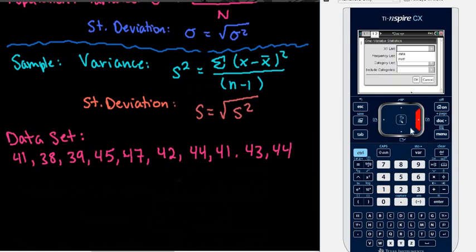The X1 list is going to be our data, because that's what I named it. You just have to remember what you named it. And then we're going to come down and just click OK. The frequency list, we just want it to be 1 because each of those data values only occur one time. If you had a frequency list, then you would put in whatever list you put that in.